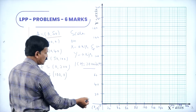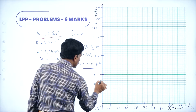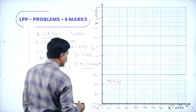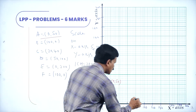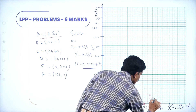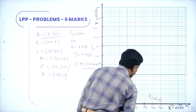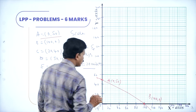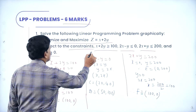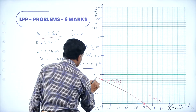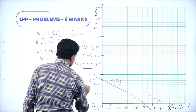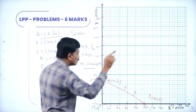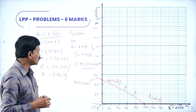Now let us draw the graph. Point A is (0, 50): x is 0, y is 50, so A is plotted here. Point B is (100, 0), plotted here. Draw a straight line through A and B. This represents the equation x + 2y ≥ 100. Since the inequality is greater than or equal to, the feasible region is away from the origin, above the origin.